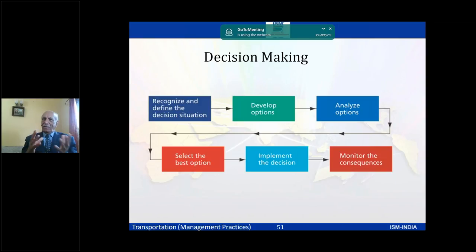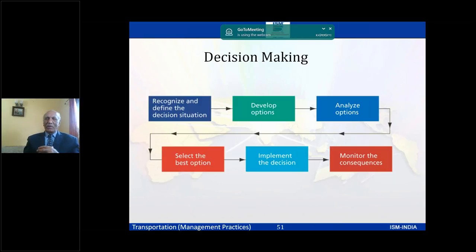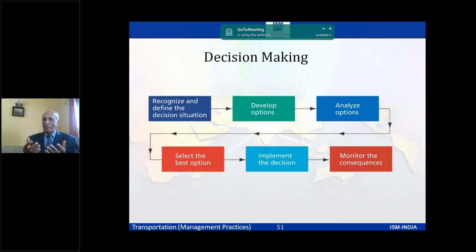The decision-making process steps are: recognize and define the issue, develop options, analyze those options, select the best option, implement it, and then — critically — monitor the consequences to understand the impact before problems become too serious.